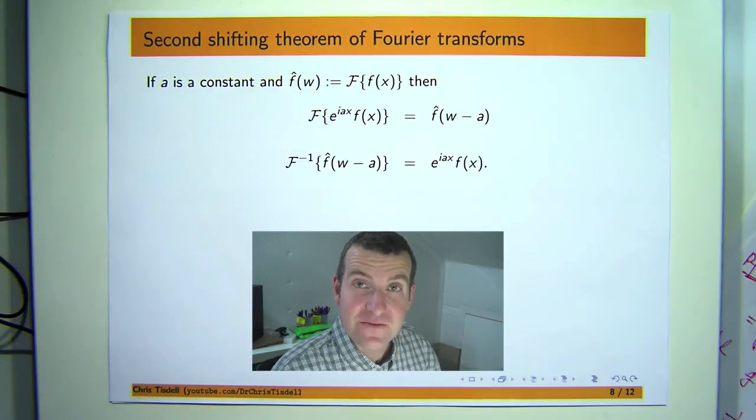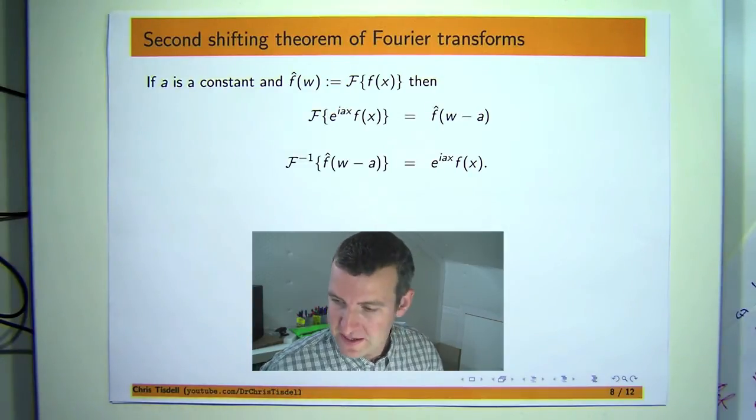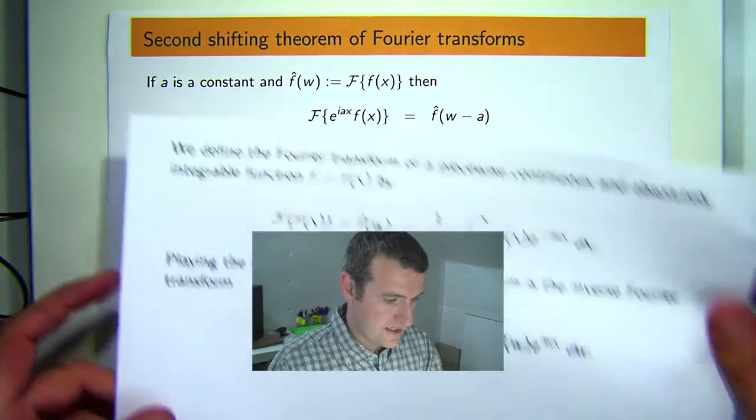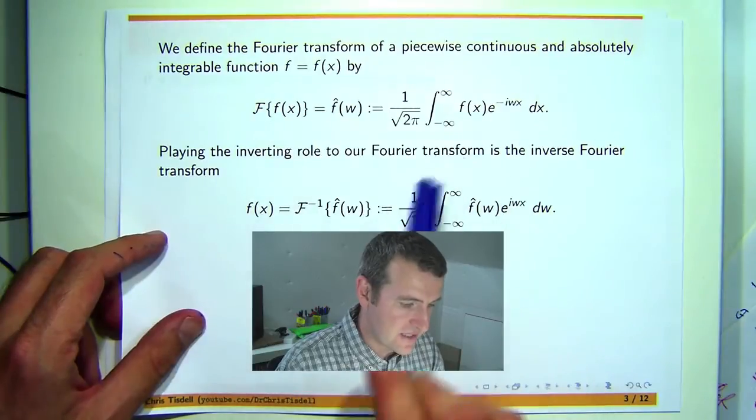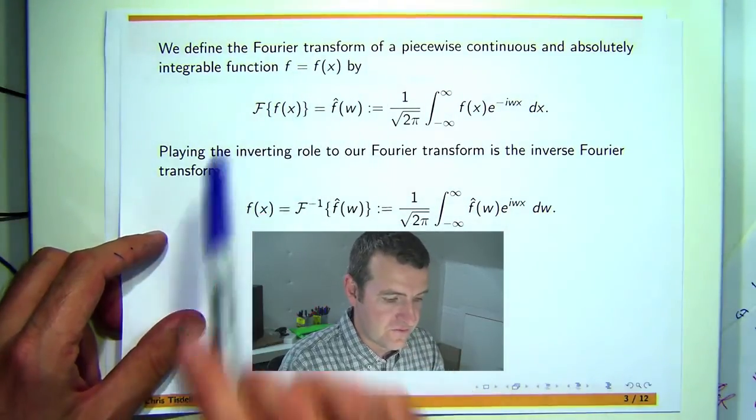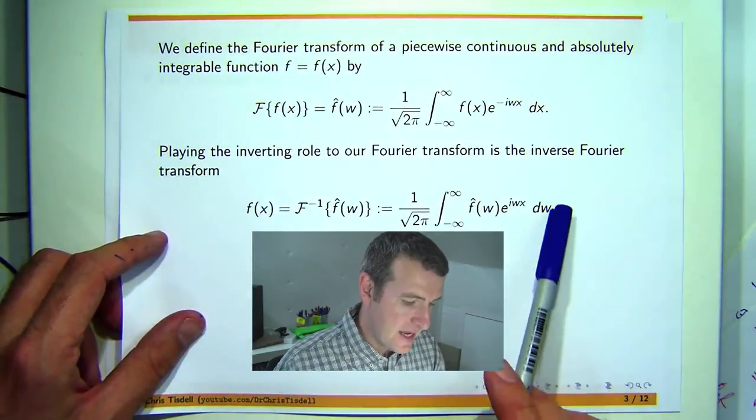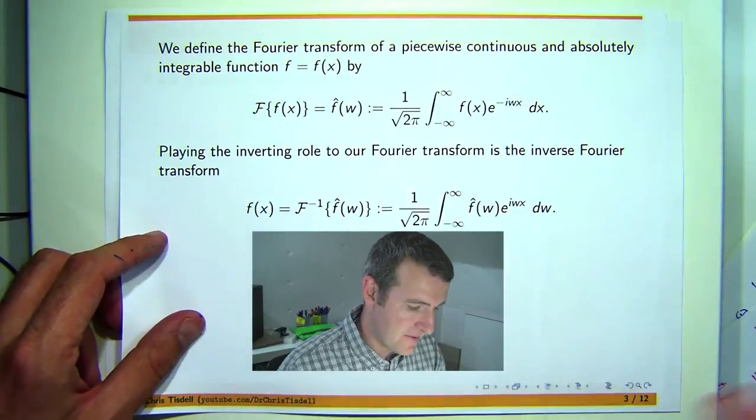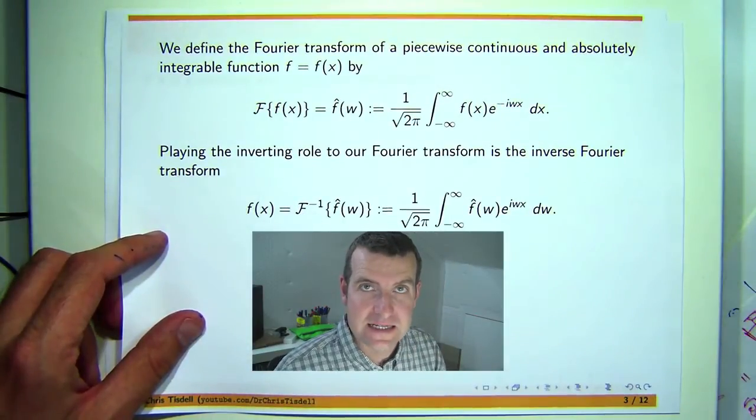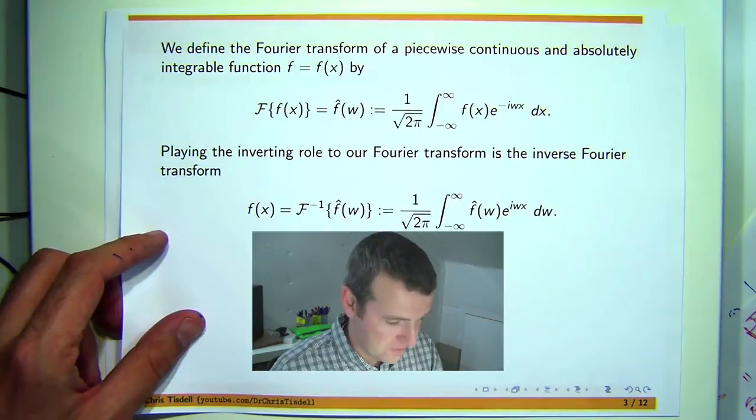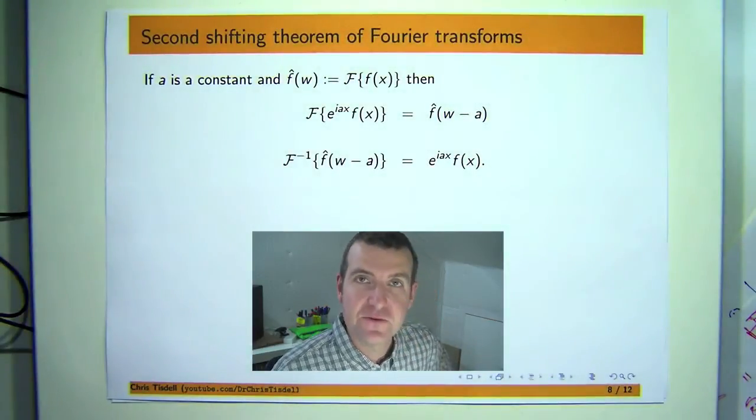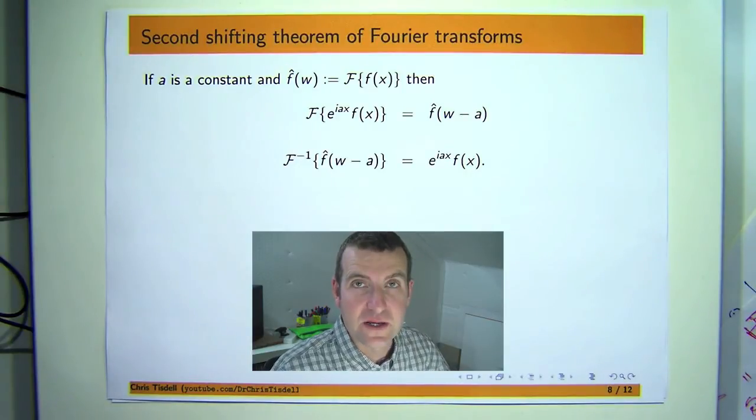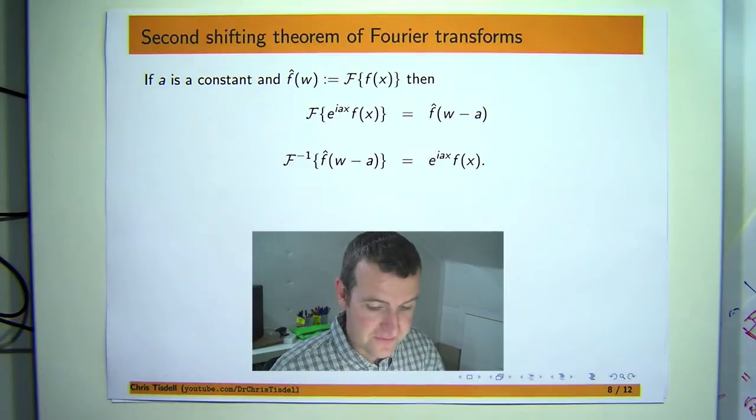Now in previous videos we defined what the Fourier transform was. It's an integral transform, so we use this curly f or f hat to denote the transform of a suitable function f of x. And we use this inverse type notation to denote the inverse transform that undoes the original transform. We computed a few of the transforms and in another video we looked at the so-called first shifting theorem. Well, there's a first shifting theorem.